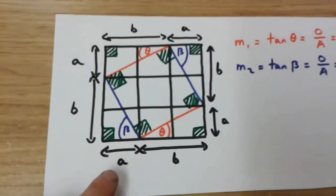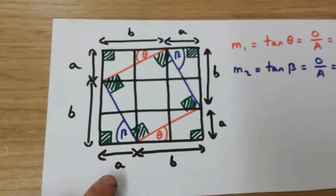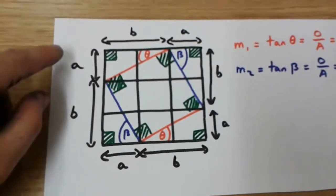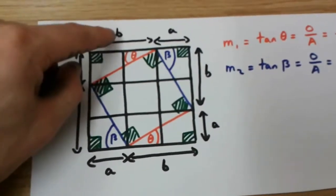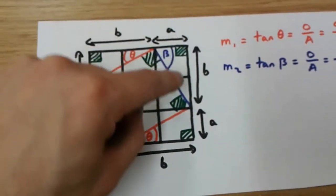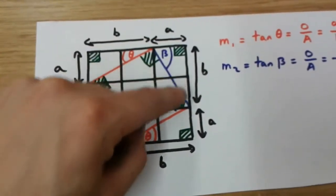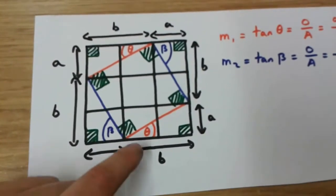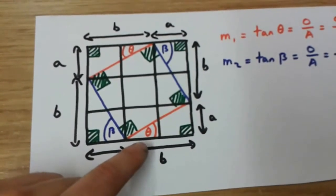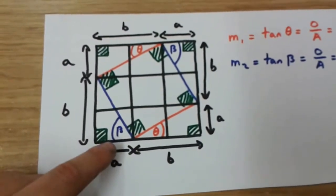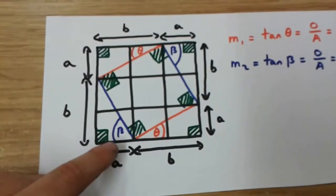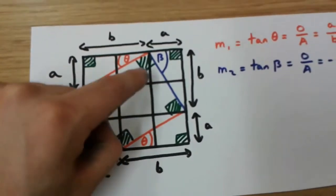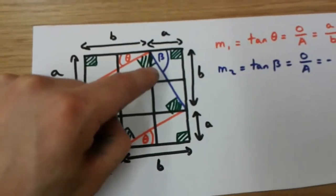Now, what you should know is that this length is a, this length is b. We've got a length b and a length a over here, a length b over here, a length a over here, a length b over here, and a length a over here. And this angle here is angle theta, this angle over here is angle beta, this angle here is angle theta, and this angle here is angle beta.